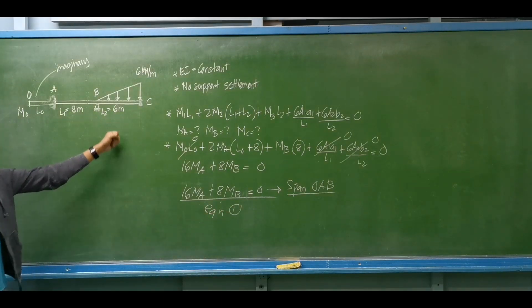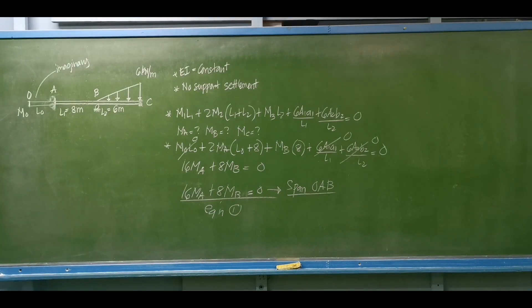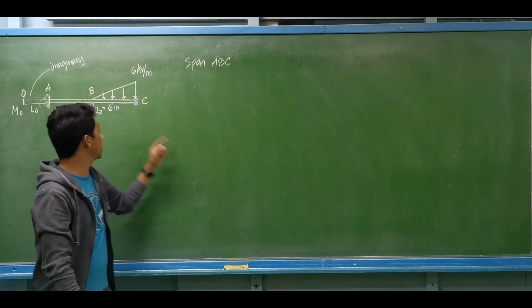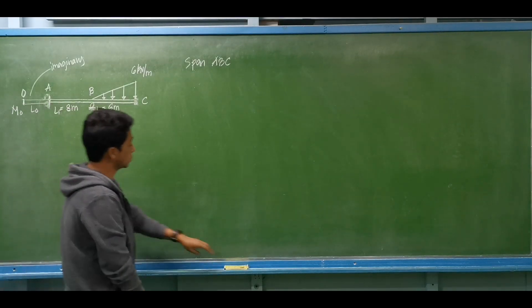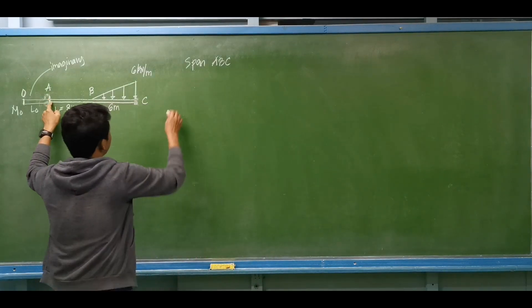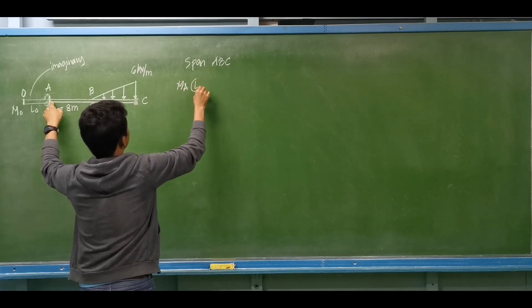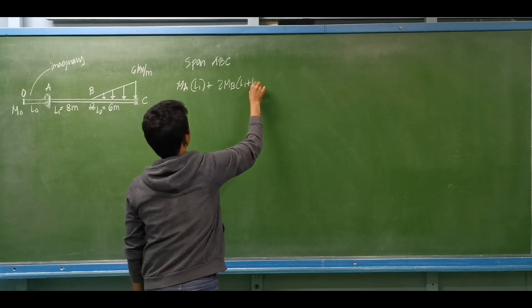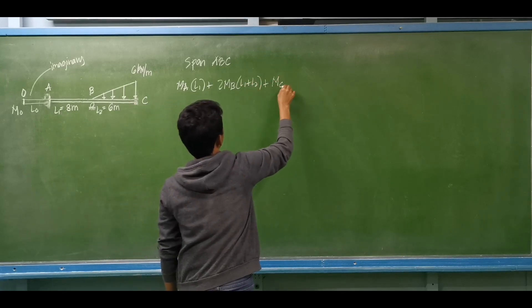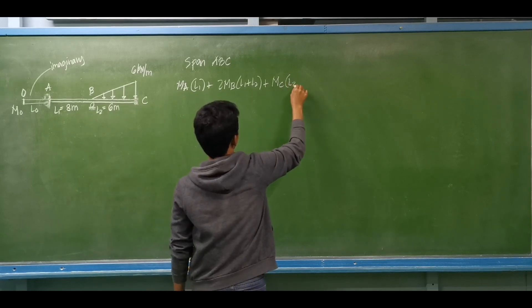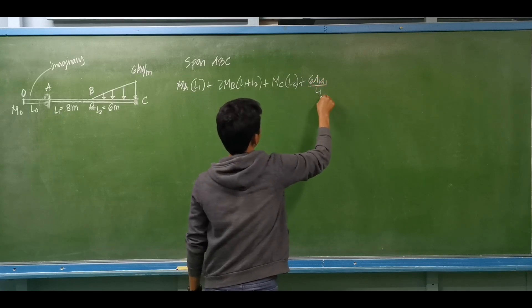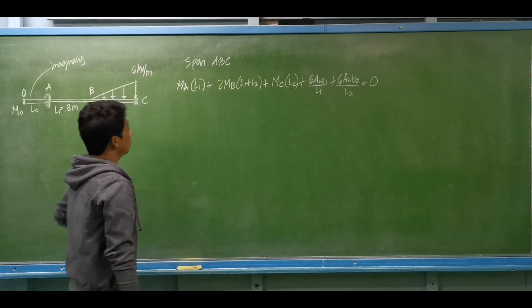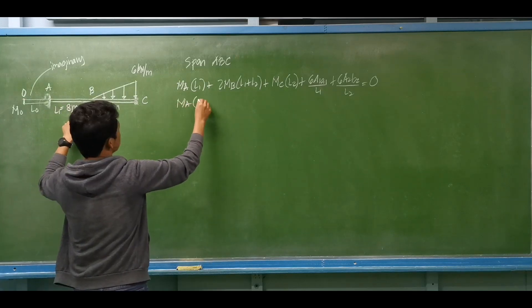Next, we consider the actual span A-B-C. We establish the three-moment equation for this span: moment at A times L1, plus twice moment at B times (L1 + L2), plus moment at C times L2, plus 6A1·ā1/L1 plus 6A2·b̄2/L2 equals zero. Substituting, L1 = 8 m and L2 = 6 m, giving us 8·MA + 28·MB + 6·MC plus the moment-area terms equals zero.